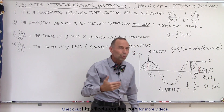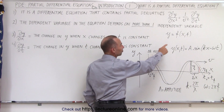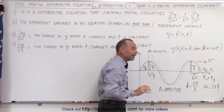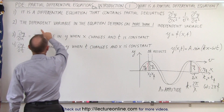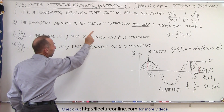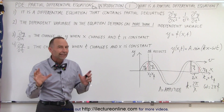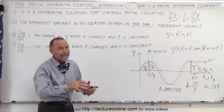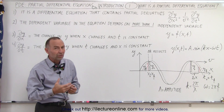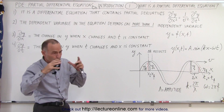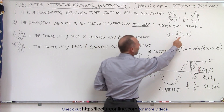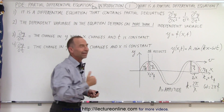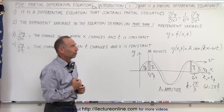So you can see here that we have two independent variables, x and t. Our function y is equal to a function of both x and t. The dependent variable in the equation depends on more than one independent variable, and that usually differentiates the need for a partial differential equation versus a regular differential equation. A partial differential equation is needed to describe something when there's more than one independent variable.